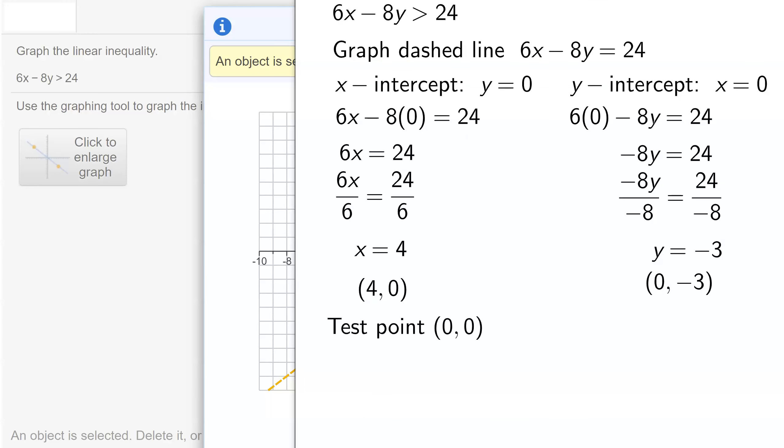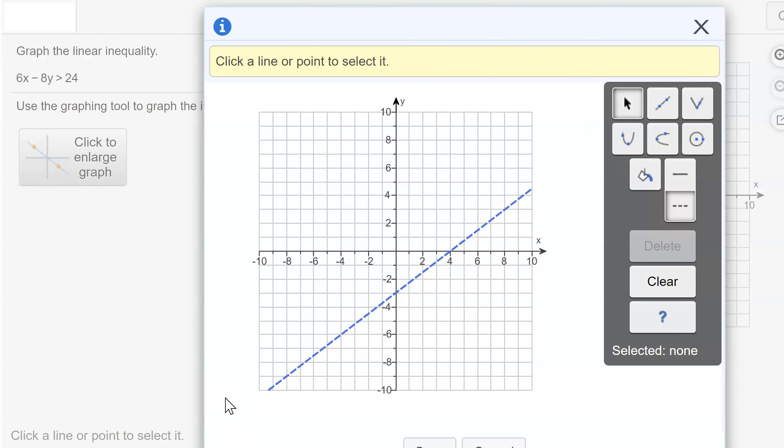So that's the test point I'm going to use, and I plug it into the original inequality. So I get 6 times 0 minus 8 times 0. Is it greater than 24? Well, is 0 greater than 24? No, that is a false statement. So I do not want the region that contains (0, 0).